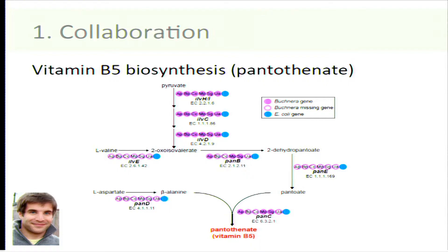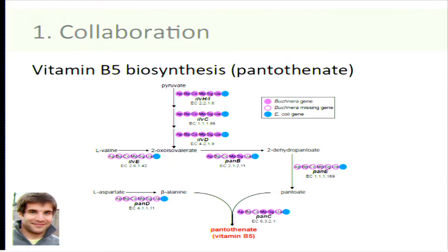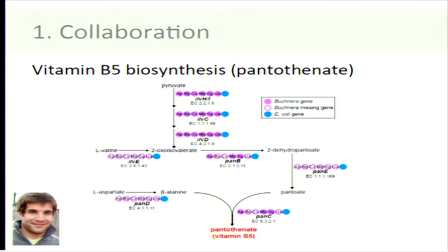This part of the pathway is important not only for vitamin B5 biosynthesis but also for biosynthesis of two essential amino acids, valine and isoleucine. PAN-C's only function is to mediate the last step in vitamin B5 biosynthesis, so its retention in the symbiont genome strongly suggests the pathway is functional. But we have two problems: Bucknera needs a supply of beta-alanine, and there needs to be complementation of PAN-E function for the pathway to work.